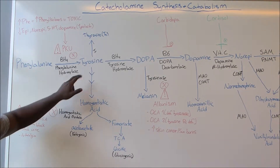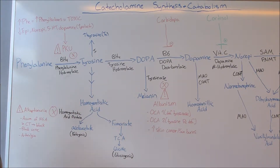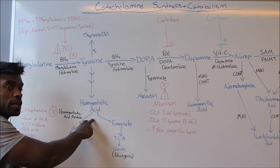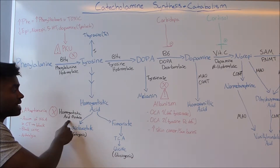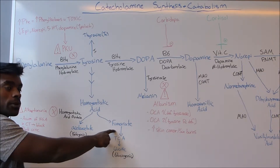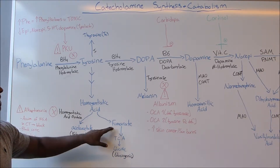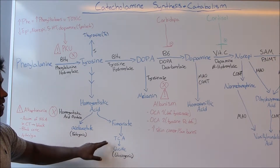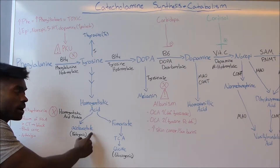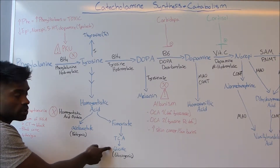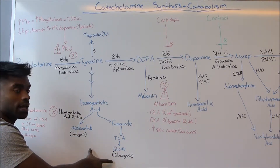Tyrosine can also be degraded into homogentisic acid. Homogentisic acid can later be degraded further into acetoacetate or into fumarate using the enzyme homogentisic acid oxidase. Fumarate can then enter the TCA cycle and become glucose. Since acetoacetate is a ketone and we also have glucose, tyrosine is both a ketogenic and a glucogenic amino acid.